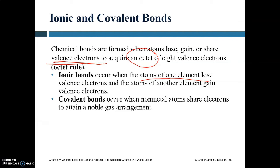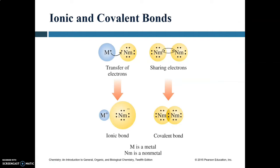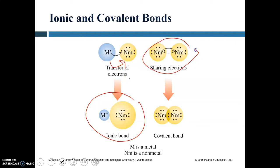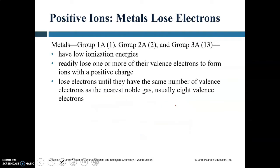Ionic bonds are like giving your Xbox to another person — you don't have an Xbox anymore and they do. Covalent bonds are like sharing an Xbox. In an ionic bond, electrons are transferred from a metal to a non-metal. In a covalent bond, two electrons are shared between two non-metal atoms so that each atom achieves an octet.